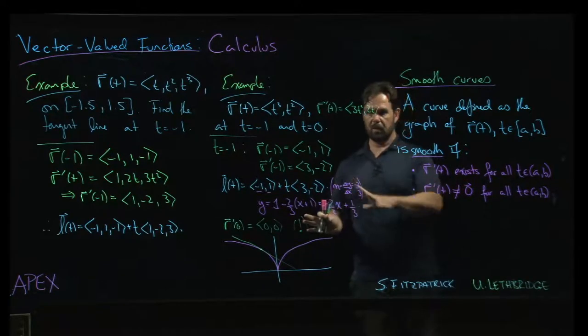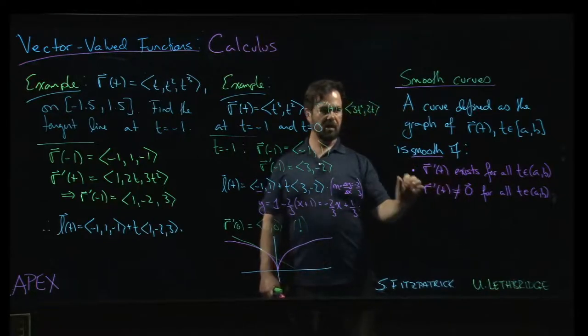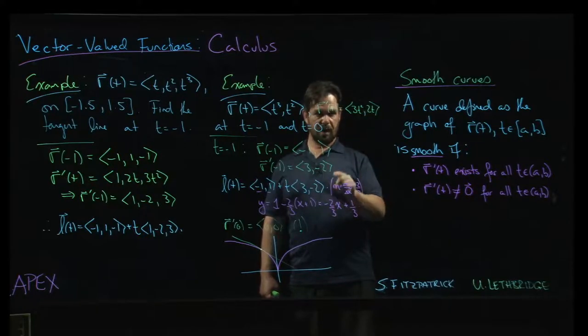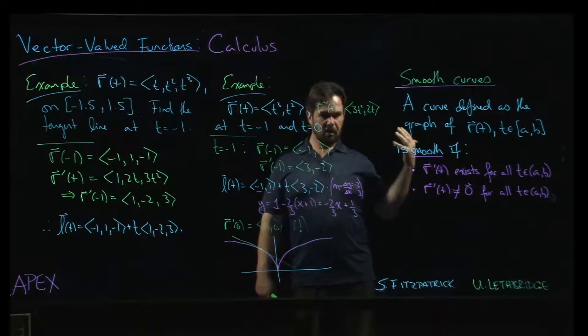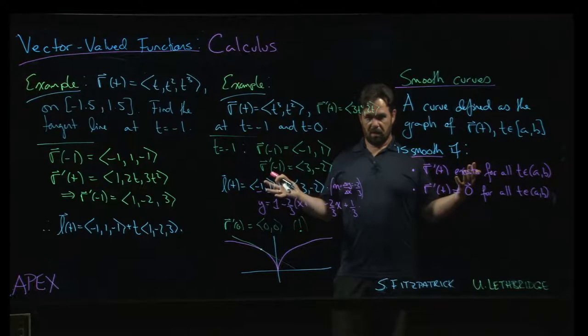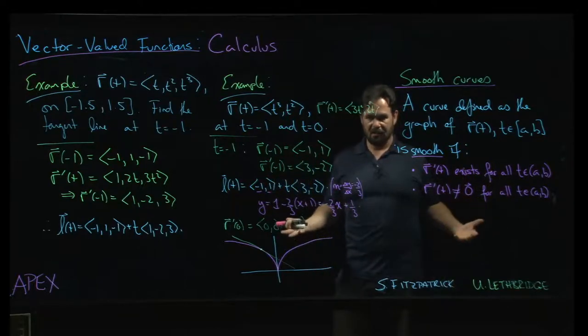In the plane, we can certainly think, well, if the derivative vector is zero, and if you think of this as giving slope of the tangent line, if you think of y over x as giving the slope of the tangent line, well, zero over zero is undefined, right? So we wouldn't have a defined slope there. So sure, that makes sense. There's no tangent line at that point.